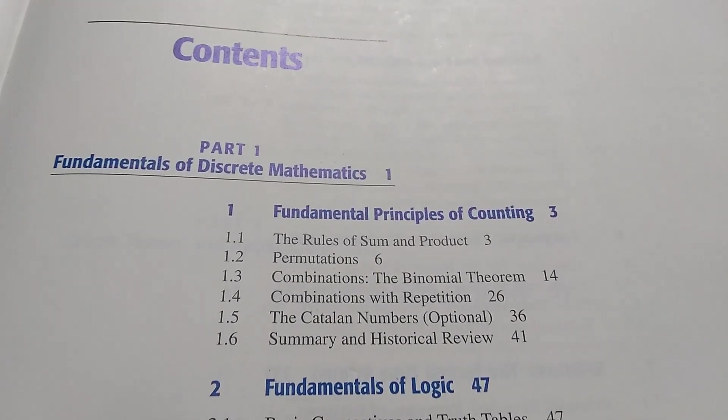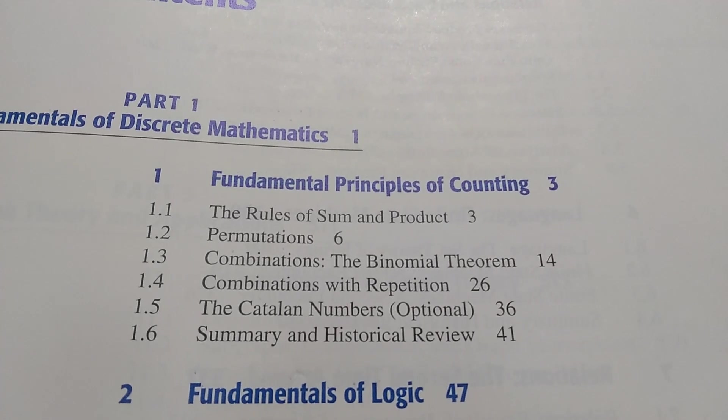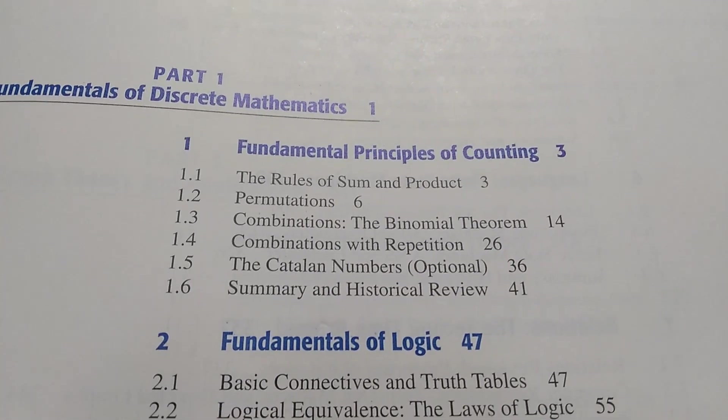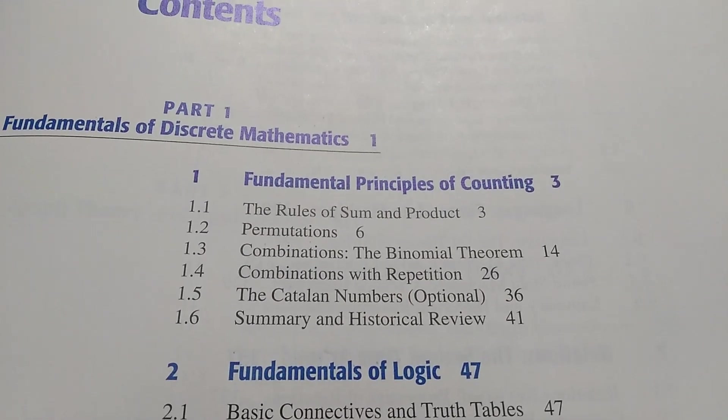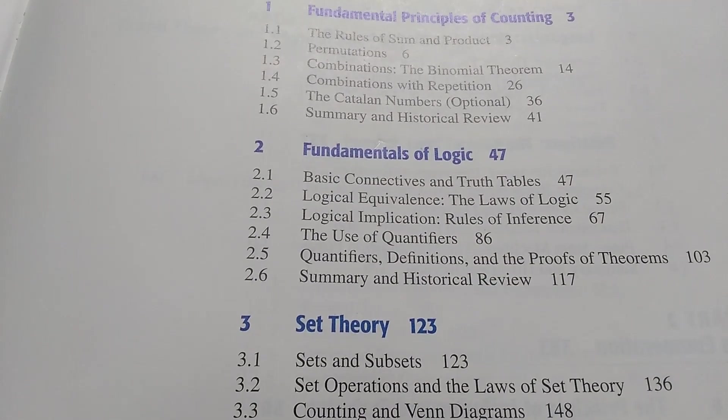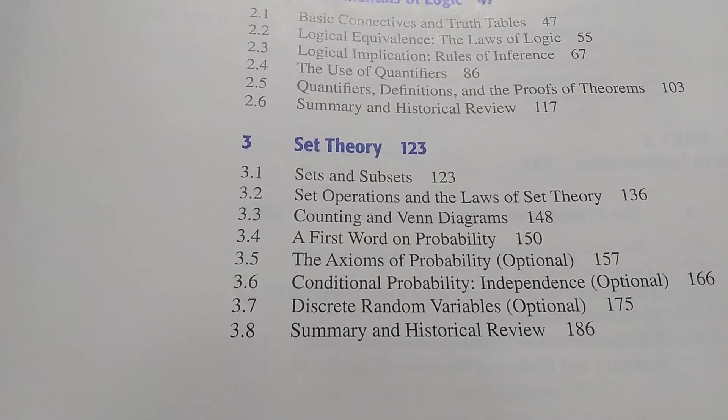This is the first page of the Table of Contents. The author starts with counting, which is very different from other discrete math books. Most discrete math books start with logic, but Grimaldi chooses to start with counting, which is quite nice. Then he goes on to logic, and then the all-important set theory.